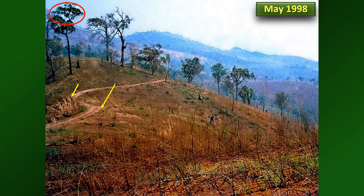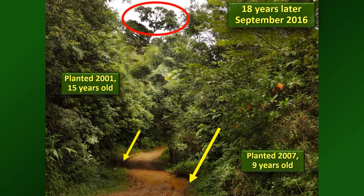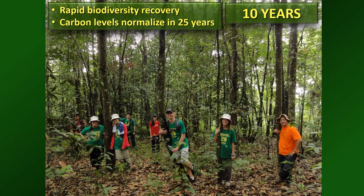Here are some results from our plots. This is our study site in May 1998, just before we started trialing the technique. And here we are in September 2016 — everything on the left of the track is about 15 years old and everything on the right is about nine years old. You can see this technique really does accelerate forest recovery. When you go inside these plots, you can see massive amounts of natural regeneration — most of these seedlings are coming back from seeds dispersed into the area by birds.